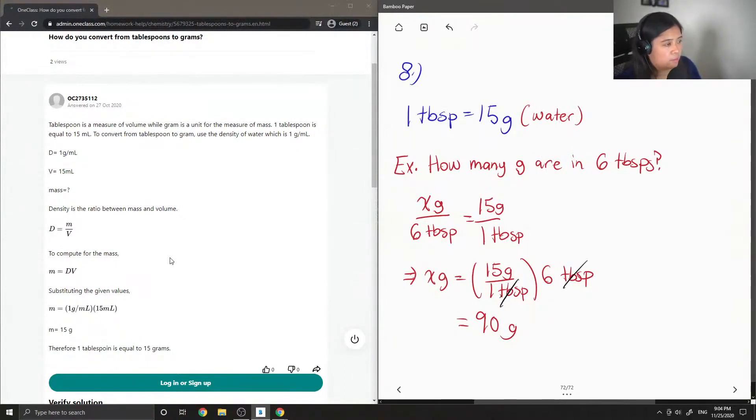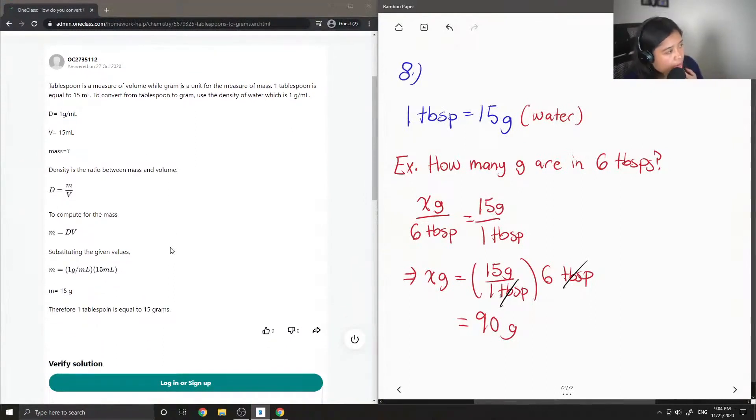Use the density of water, which is 1 gram per mil. Yeah, you could do that too.